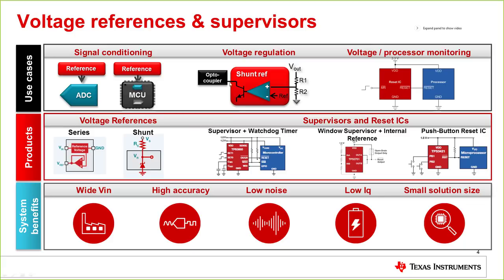On the other side, we have shunt references, which can be as simple as a two-terminal device — essentially a Zener diode or clamping device replacement — as well as adjustable versions commonly found in isolated power supply designs like flyback converters with secondary-side regulation, where the shunt reference drives an optocoupler. Shunt references are also common in level-shifting applications where you have bipolar signals from a sensor that need to be brought up to the common mode of your ADC or DAC.